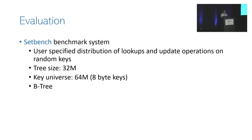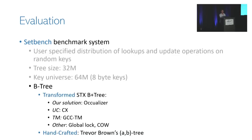The setbench benchmark tests trees by calling a user-specified distribution of lookups and updating operations and collecting throughputs. We tested trees with an initial size of 32 million nodes and a key universe of 64 million 8-byte keys. We compared OCCUalyzer-converted STX B+tree with copy-on-write, GCC's transactional memory, and the CX universal construction system, as well as Brown's AB-tree as a handcrafted concurrent B-tree baseline.